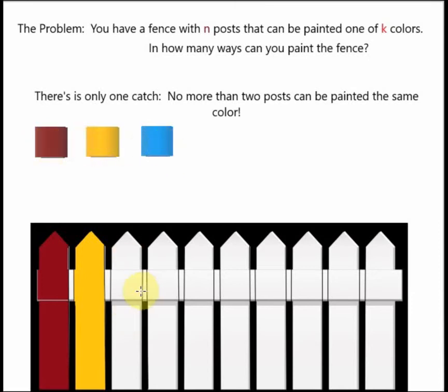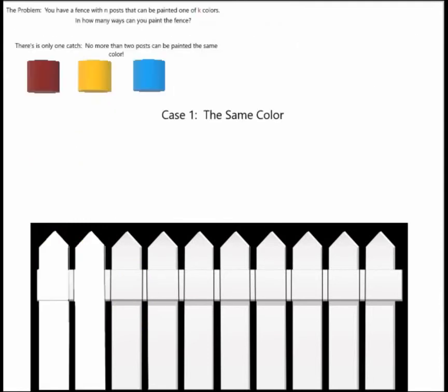Basically, your next choice could be the same or different. So we have two cases here. The first case is if the colors are the same, and the second case is if the colors are different. The next color is determined by whether or not the previous two colors were the same or different.